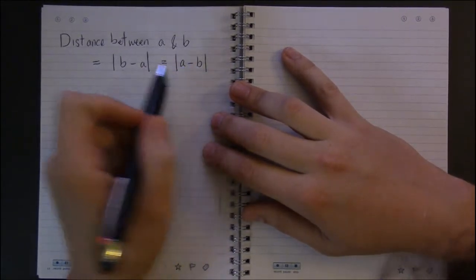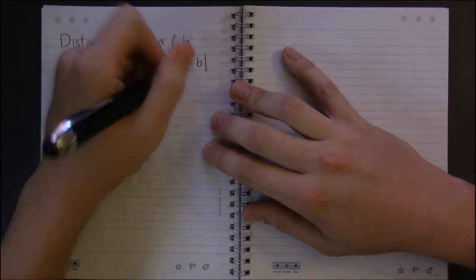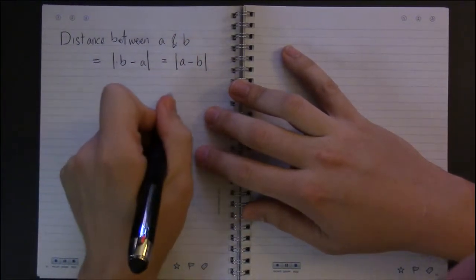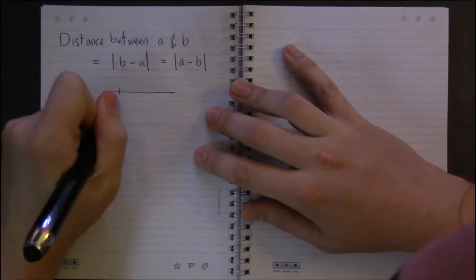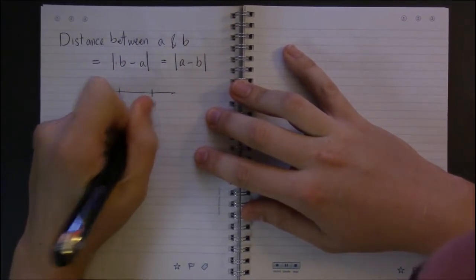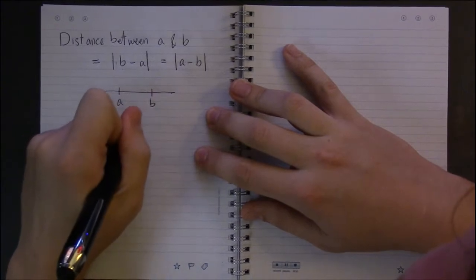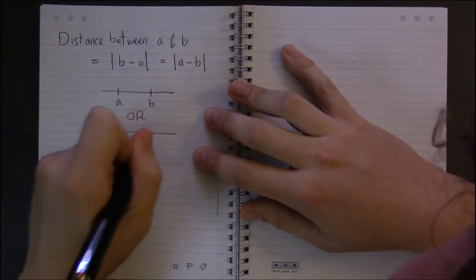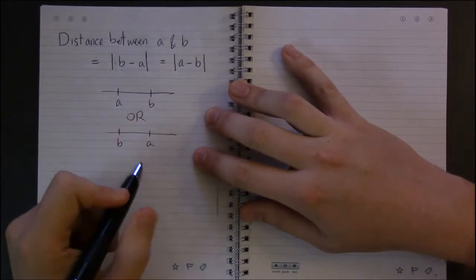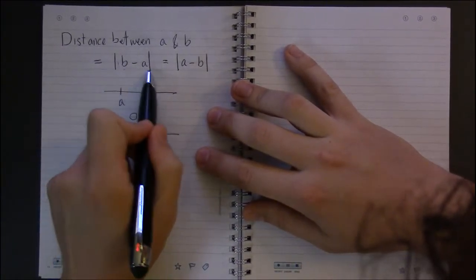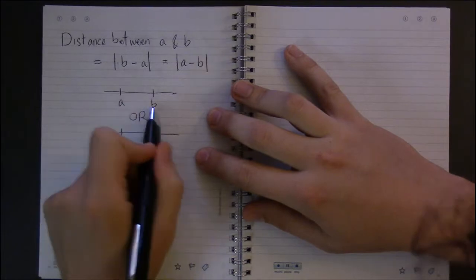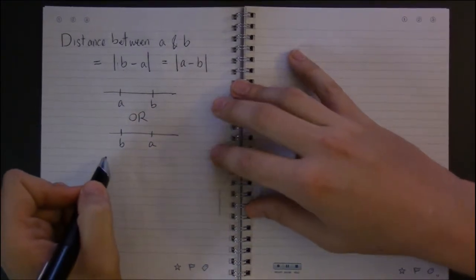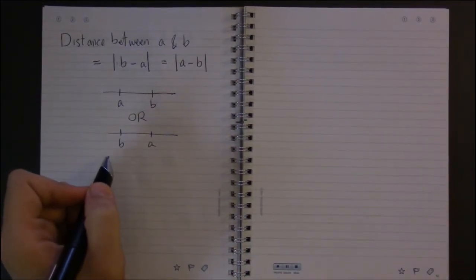And absolute values strip away direction. So regardless of whether a is on the left and b is on the right, or b is on the left and a is on the right, this absolute value will give you the distance between these two points.